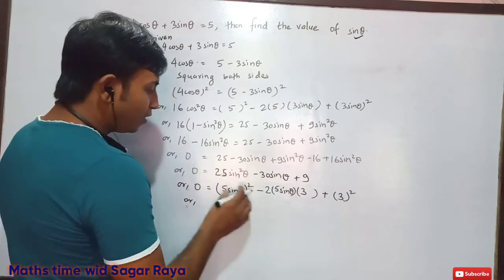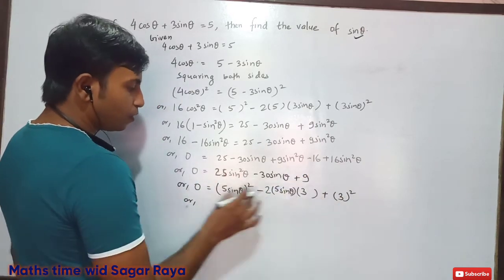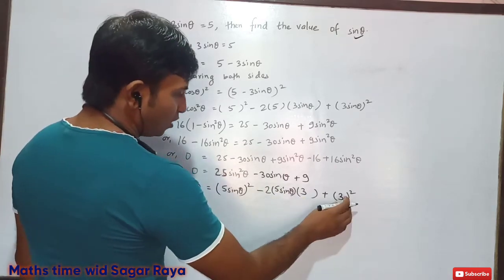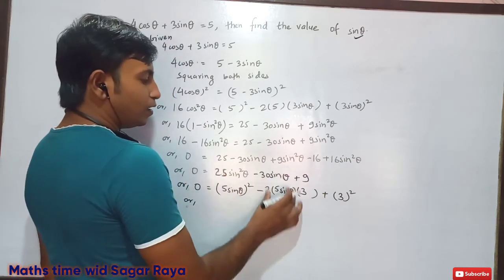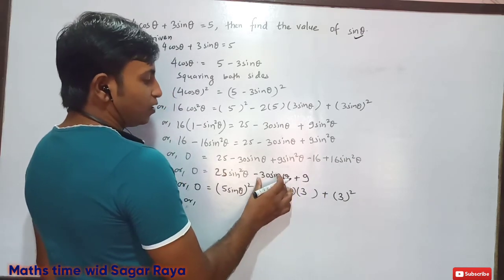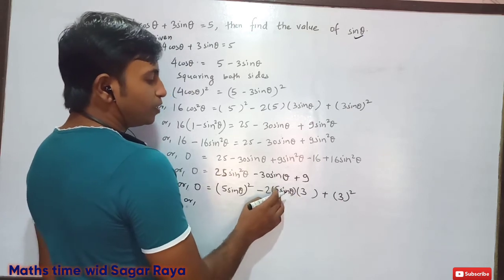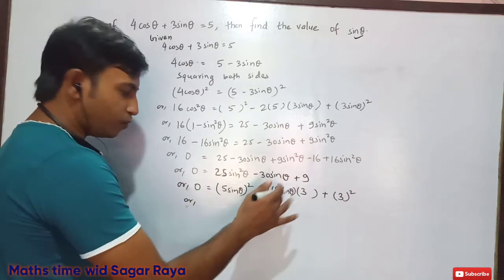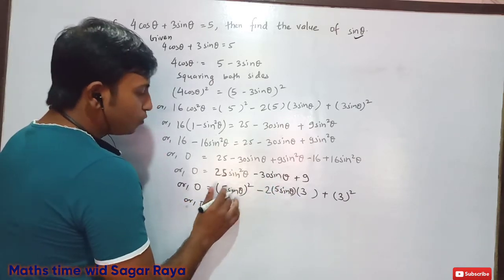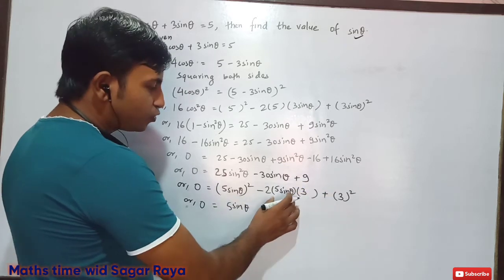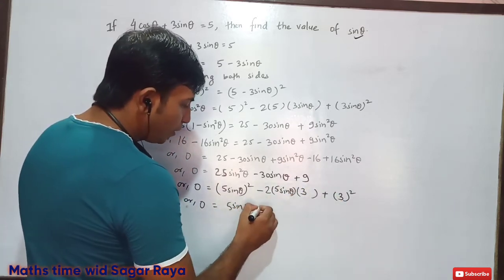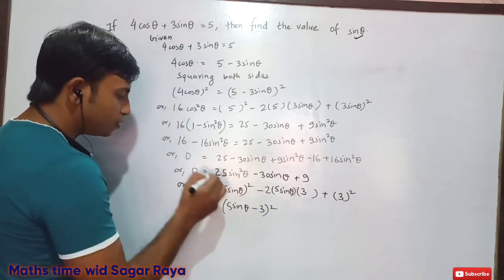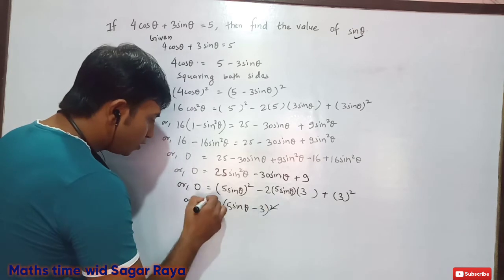So we have confirmed: 25 sin²θ − 30 sin θ + 9 = (5 sin θ − 3)². Therefore 0 = (5 sin θ − 3)², which we can also write as 0² = (5 sin θ − 3)². Cancelling the squares: 0 = 5 sin θ − 3.